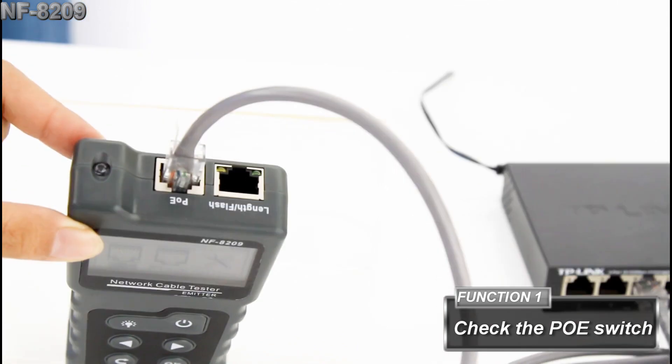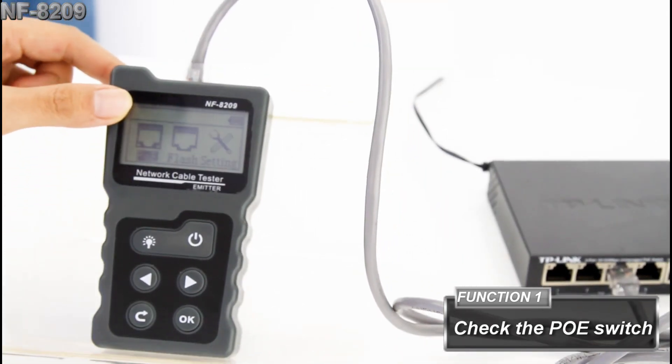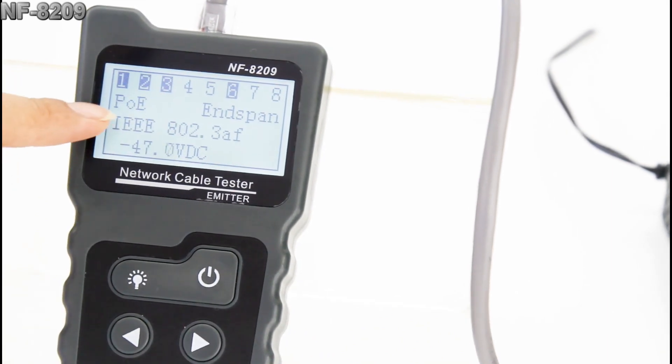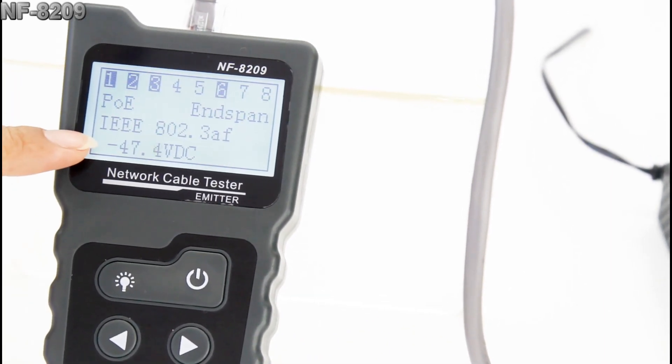We put the cable in the PoE port, and we can see the figures on the screen: the type, the standard, and the voltage.